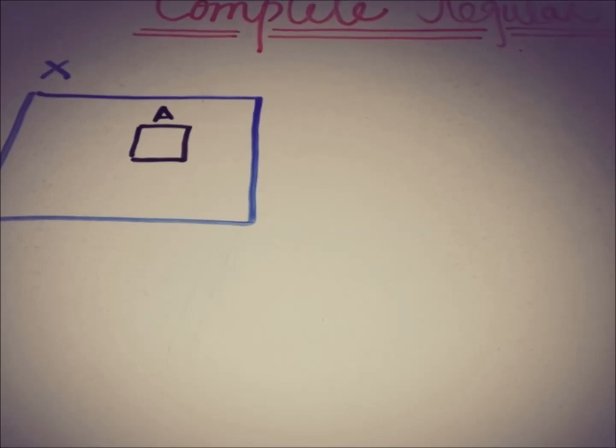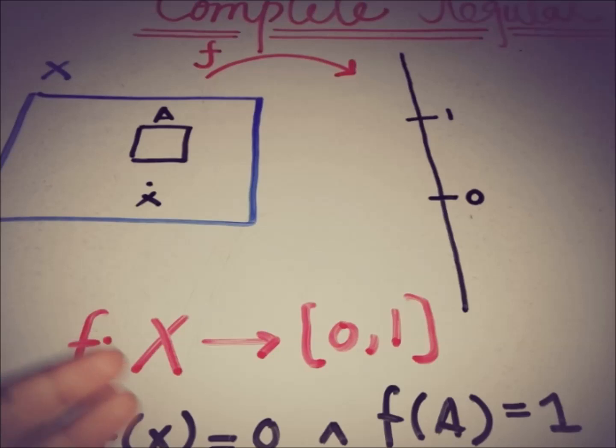If we have a topological space and a closed set in that topological space that is A, and if we pick any random point x that is not in that closed set, then this topological space is said to be completely regular if we have a function going from X to the closed set [0,1] such that this function maps any element x that is not from the closed set to 0 and maps A to 1.